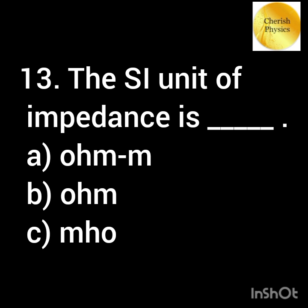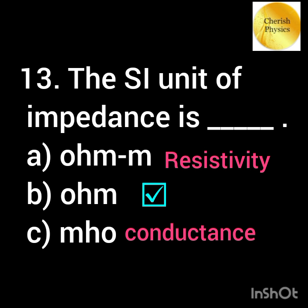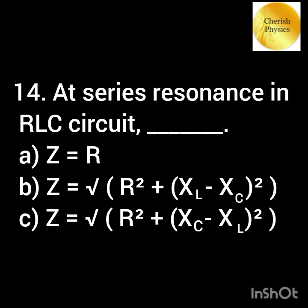The AC unit of impedance is dash. At resonance in a series RLC circuit, the impedance Z is equal to dash.